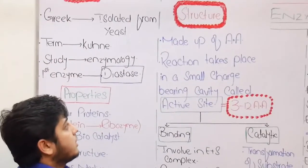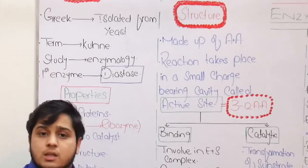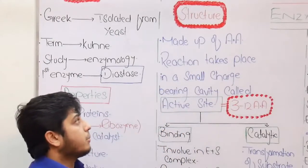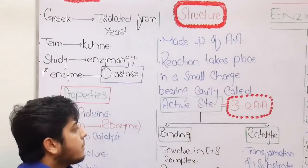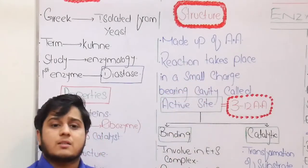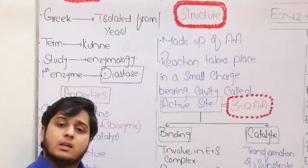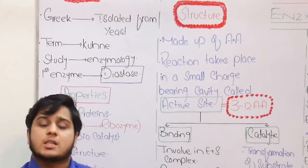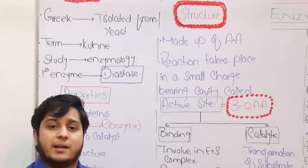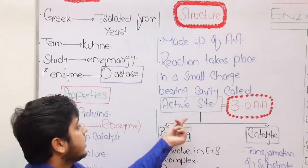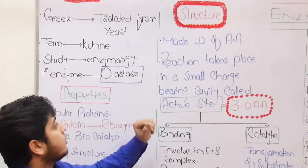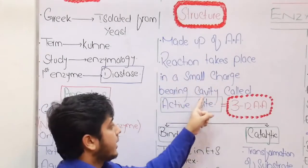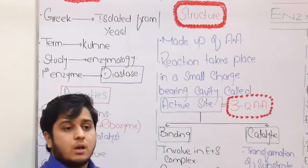In terms of the structure of enzymes, enzymes are proteins and proteins are made up of amino acids. Enzymes have a specific region involved in the catalytic process, where the substrate molecule binds. That region is called the active site. The reaction takes place in a small charge-bearing cavity known as the active site.